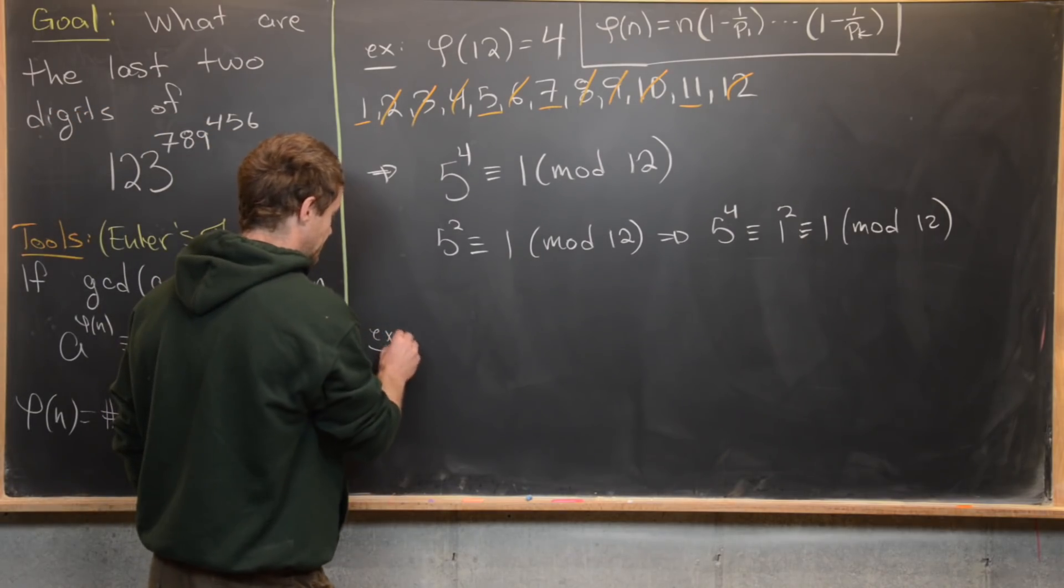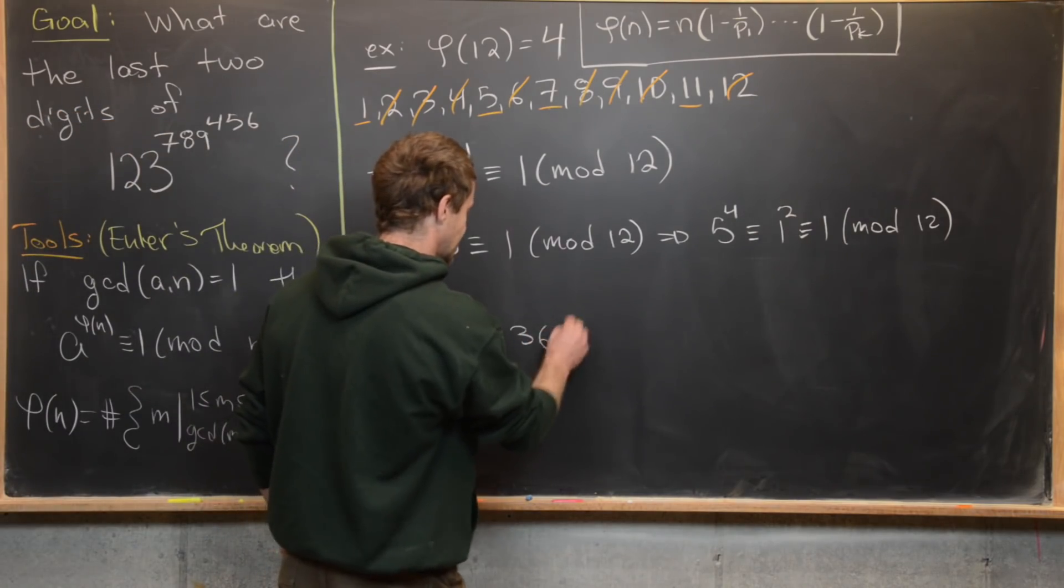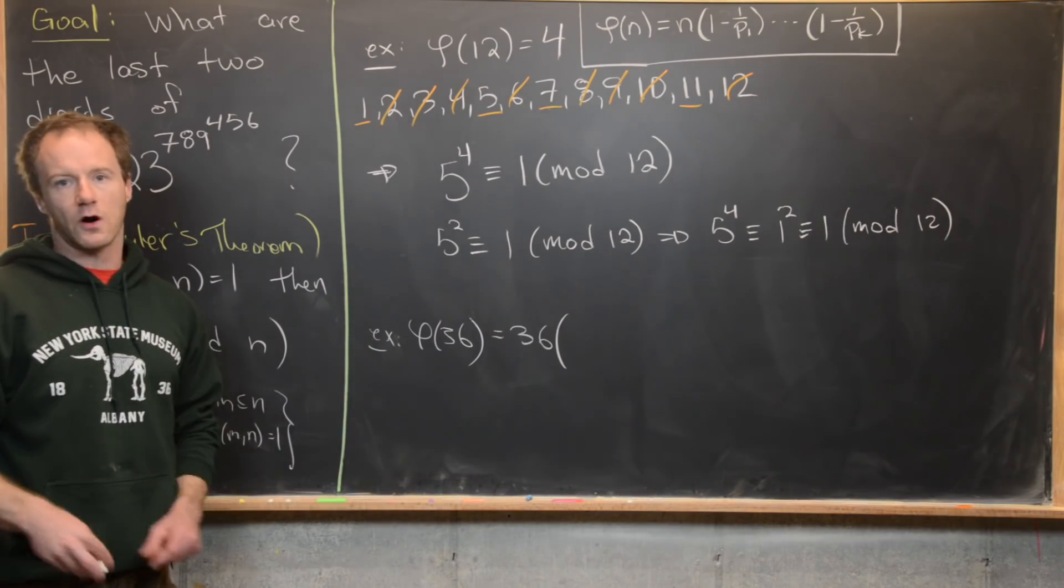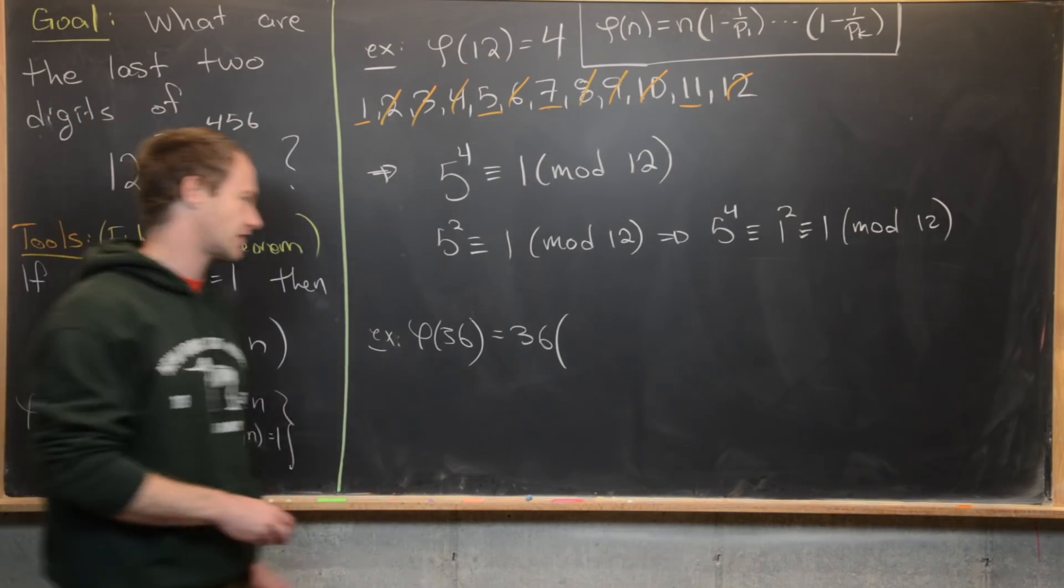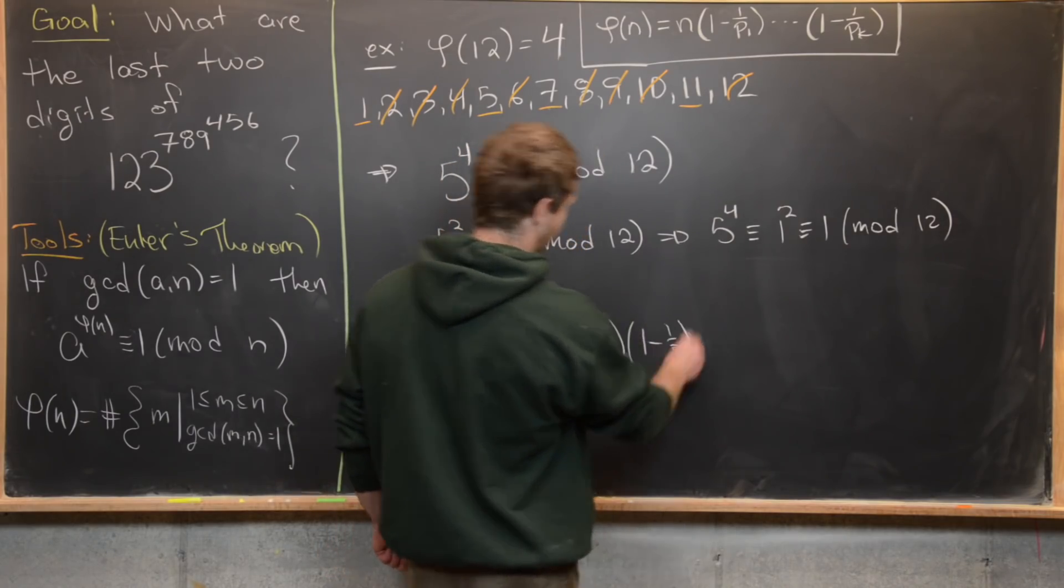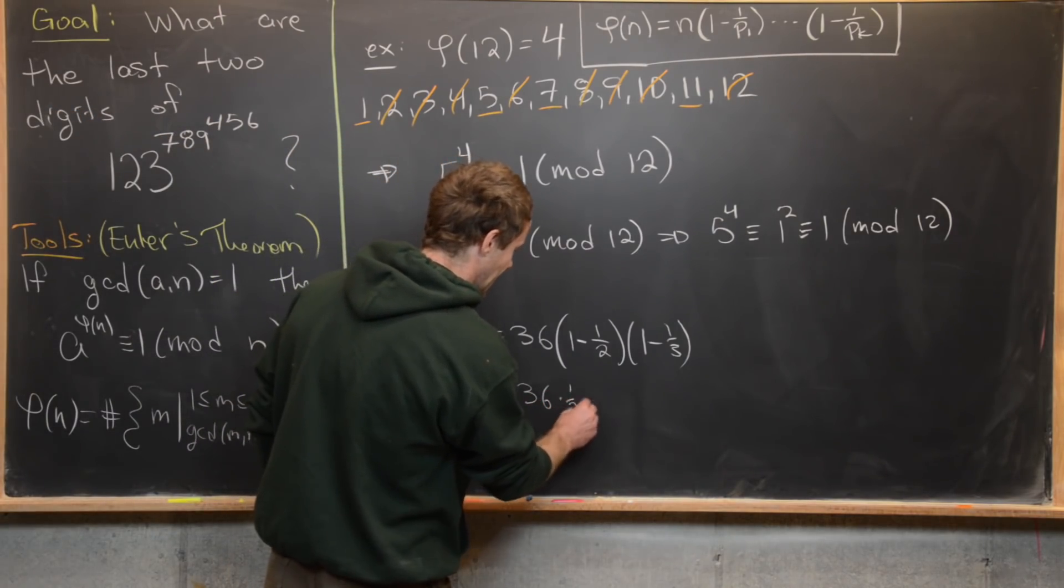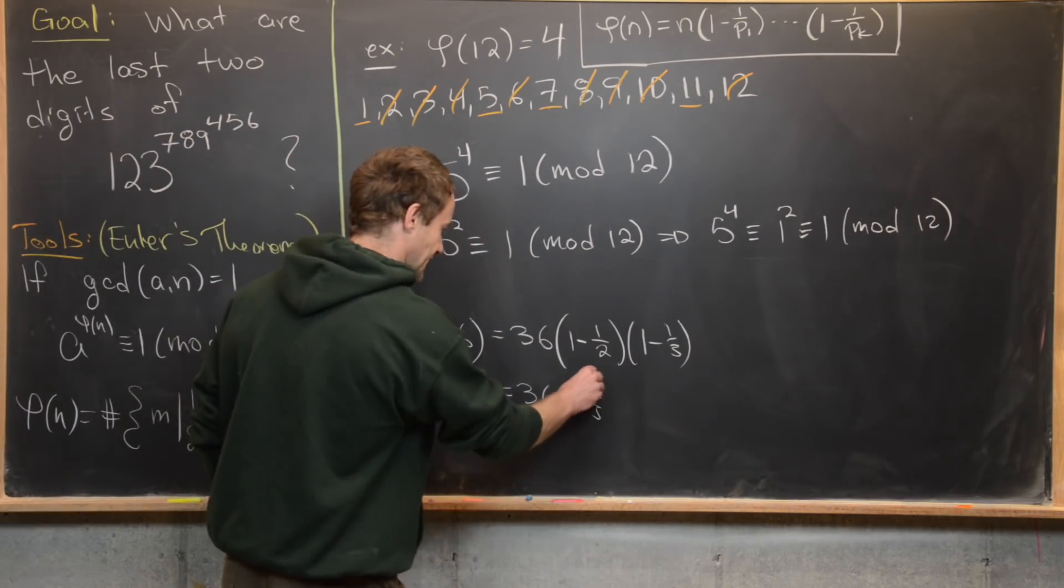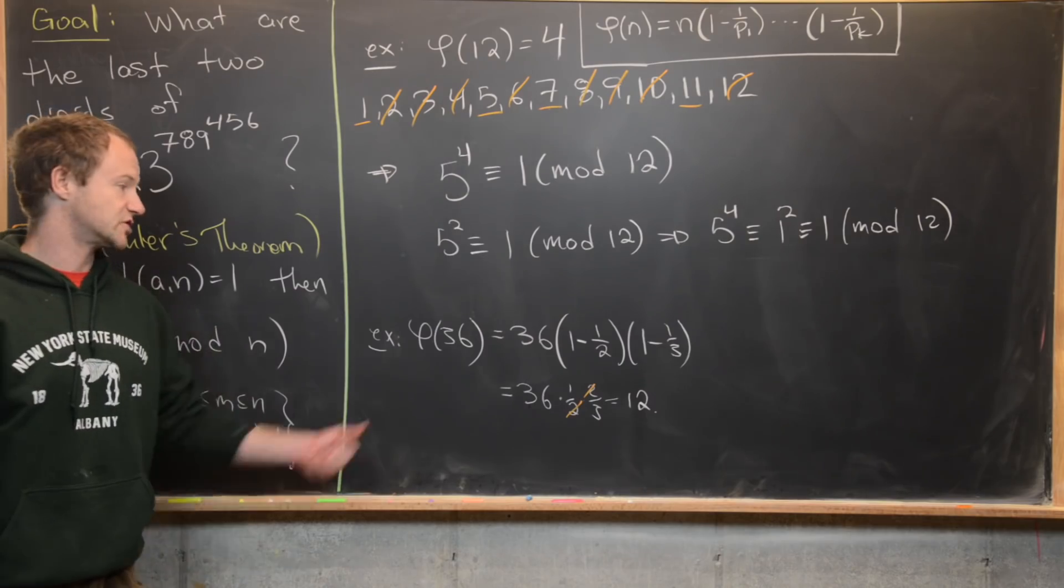For example, let's look at phi of 36. So we know that's going to be equal to 36. And now we've got to multiply by 1 minus 1 over all of the prime divisors of 36. So there are only two prime divisors of 36, 2 and 3. So we've got times 1 minus 1 over half, 1 minus 1 over third, like that. So that's all there is to it. Notice that this is going to give us 36 times 1 half times 2 thirds. Notice we can do a little simplification there. Those twos cancel. 36 over 3 is 12. So that means phi of 36 is 12.